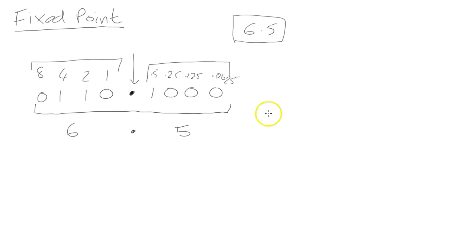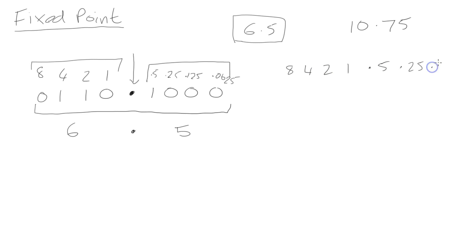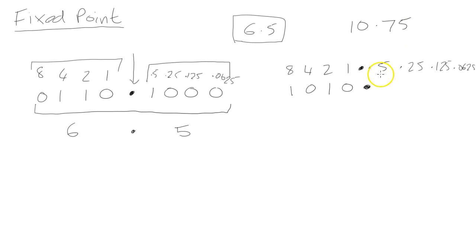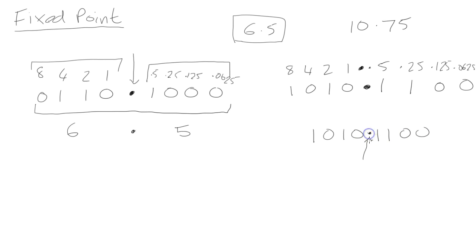Let's try another one — let's do 10.75. What kind of number would that look like? Let's write the binary values at the top: 8, 4, 2, 1, 0.5, 0.25, 0.125, and 0.0625. So we want to represent 10, so that's an 8 and a 2. We've got our decimal place in the middle. To make 0.75, we need the half and the 0.25 — and then we're okay with everything else. So our actual final number would look like this: 1, 0, 1, 0, 1, 1, 0, 0 — with our imaginary fixed point right in the middle. Four bits for this side and four bits for this side.